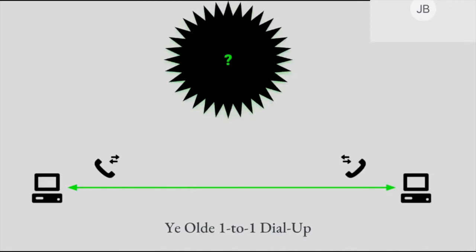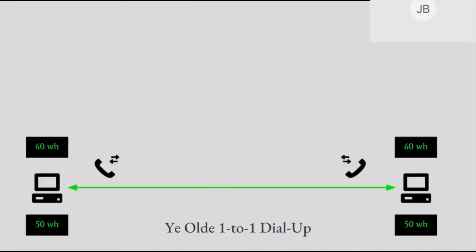So, how much electricity did this conversation between me and Dan consume? Let's assume that Dan and I were each running the hottest desktop computer of 1995, the Compaq Presario 2200, and we each had 15-inch CRT monitors at full brightness because those are the numbers I could find. And we're both connecting to the internet via 33.6K modems — not the best of the time, not the worst. I feel like I was maybe using an 8K modem, but I'm trying to be conservative here with regard to energy, so we're going to go with the Primo 33.6.